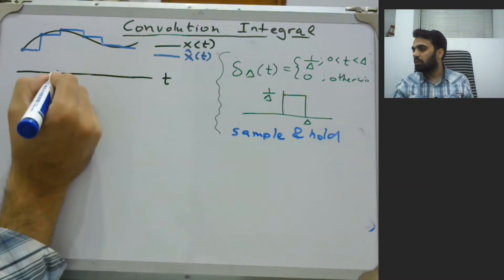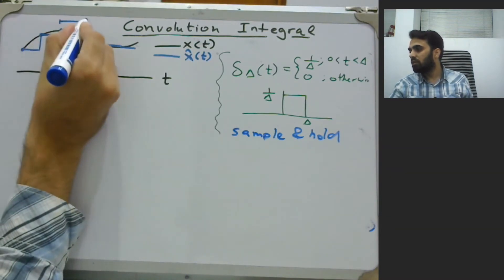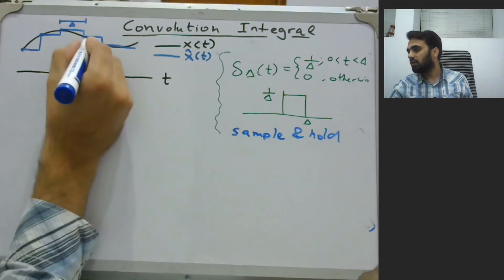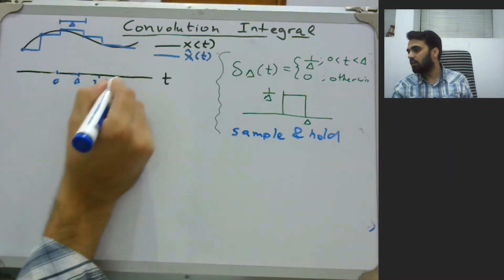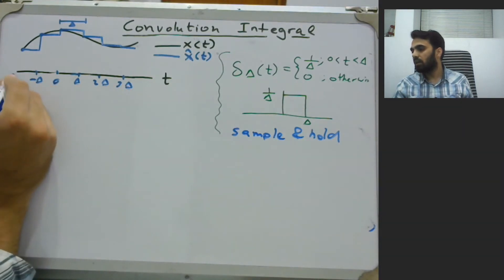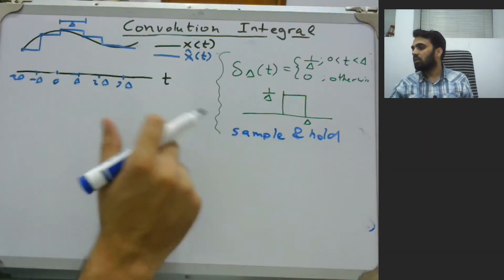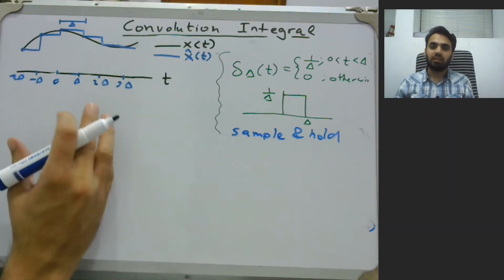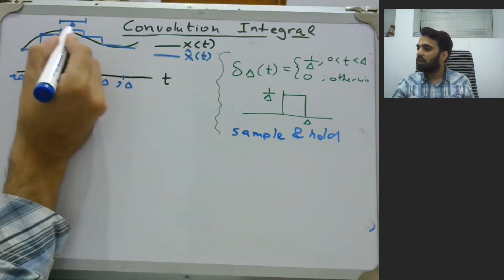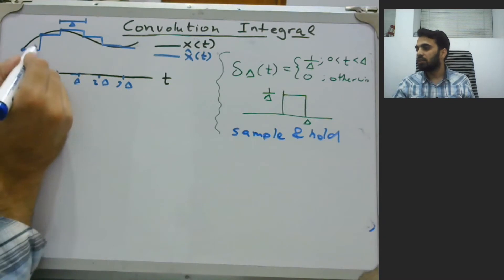So this is our zero; the duration of each interval is simply Delta — this is Delta, 2 Delta, 3 Delta, this is minus Delta, minus 2 Delta, and so on. So in this sample-and-hold approach, or what we call a staircase approximation, we have approximated the black signal X(t) into an estimate of that signal, that is X-hat of t.